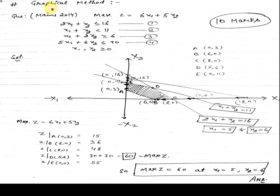As you can see, this question was asked in the UPSC mains 2014 for 10 marks. It was maximize 6x1 plus 5x2. These four equations are given: 2x1 plus x2 is less than 16, x1 plus x2 is less than or equal to 11, x1 plus 2x2 is greater than or equal to 6, and the rest of the three are less than.